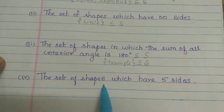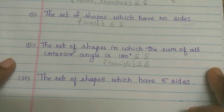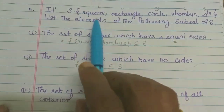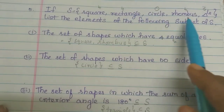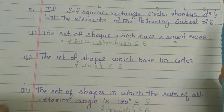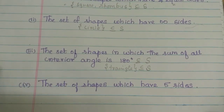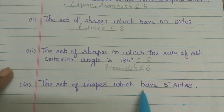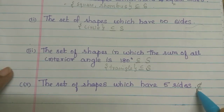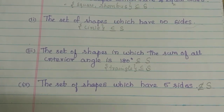The set of shapes which have 5 sides. From our set S, the shapes have 4 sides, 3 sides, or 0 sides, but none have 5 sides. So this is not a subset of S — it would be an empty set. That's all.